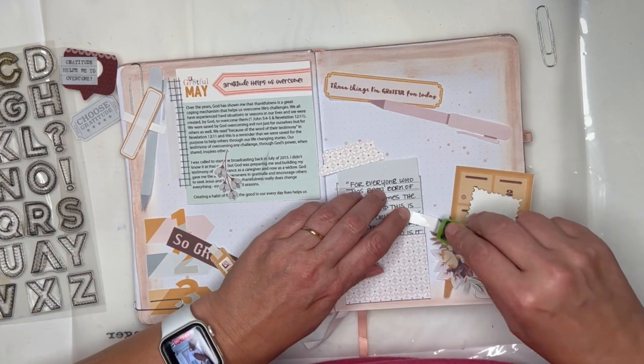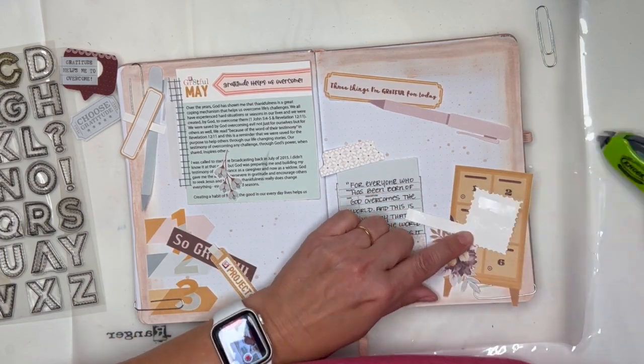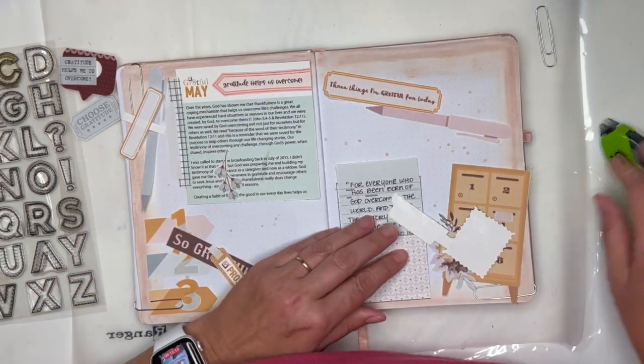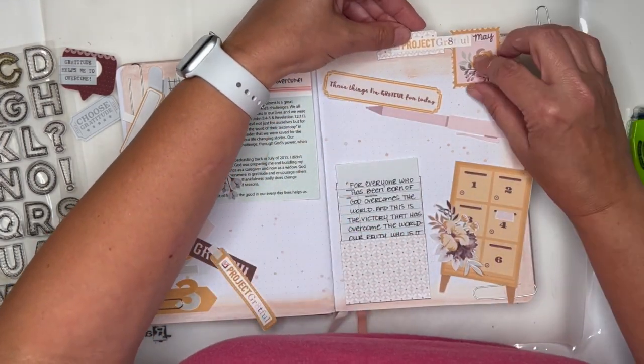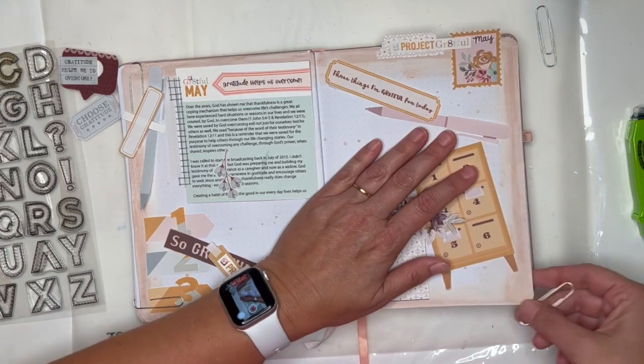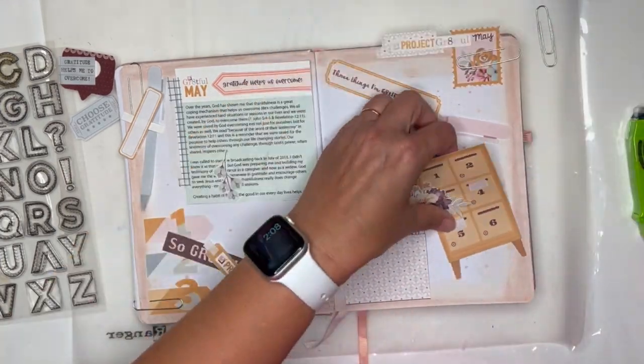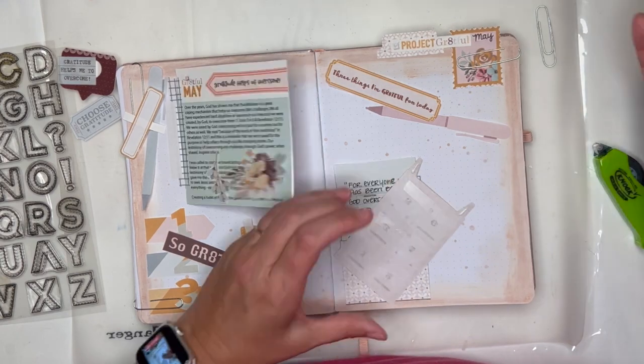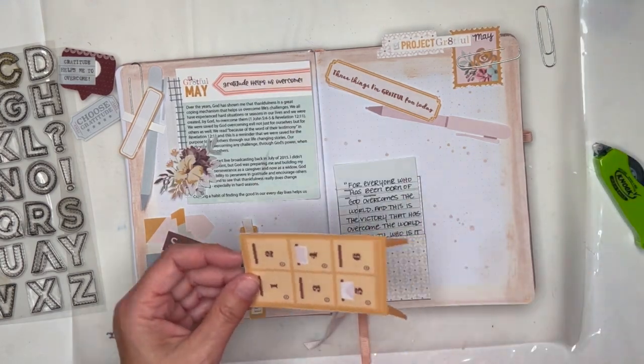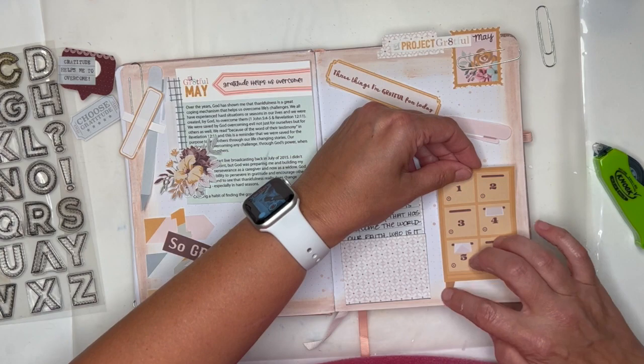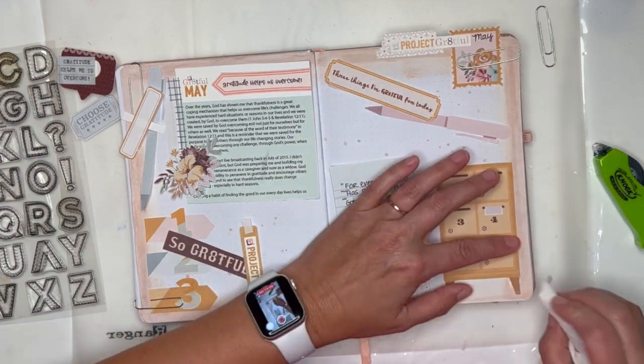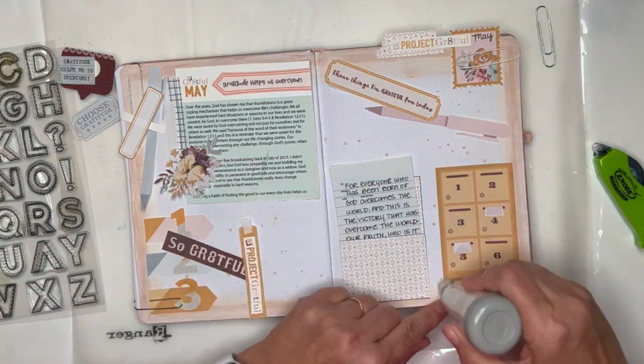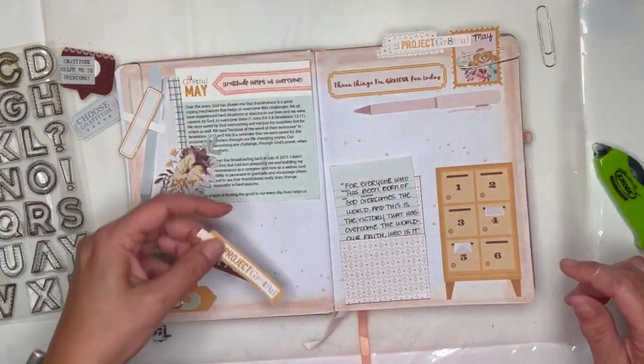There we go, I'm going to stick that down. Making sure that I don't have any adhesive that's exposed, but if I did I would just use my EK Success powder tool. You could also use baby powder just to get rid of any sticky adhesive.